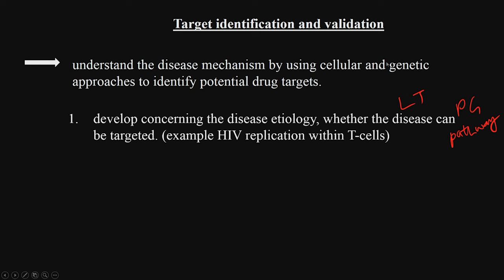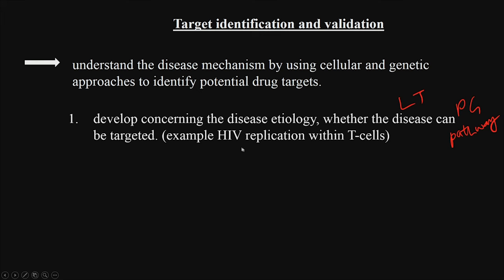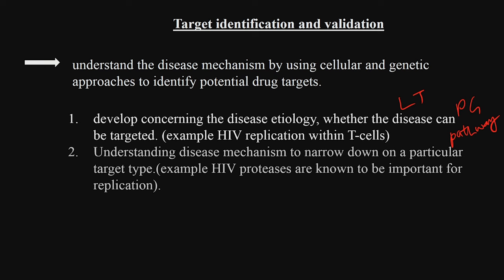There could be some diseases where you might not find a target — then you are in trouble. Understanding the disease mechanism helps narrow down a particular target. Once you understand the mechanism, there could be many targets, and you may have to focus on one. For example, HIV proteases are known to be important for replication — that could be a target. Similarly, enzymes in the prostaglandin pathway leading to inflammation could be the target.